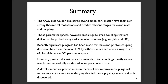Let me summarize. The QCD axion, axion-like particles, and axion dark matter each have strong theoretical motivations and predict relevant ranges for axion mass and couplings. Those parameter spaces predict quite small couplings that are difficult to probe using available axion sources. Significant progress has recently been made for the axion-photon coupling based on axion dark matter detection, which can cover a major part of ultralight axion dark matter parameter space. Currently, projected sensitivity for axion-fermion couplings mostly cannot touch the theoretically motivated parameter space, but development of precise measurements of axion-fermion couplings will tell us important clues about underlying short-distance physics once an axion is discovered.